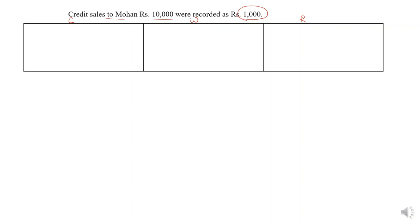First let us write the correct entry. We have to give the entry for credit sales to Mohan at rupees 10,000. So the entry will be: Mohan's account debit, to sales account, the amount 10,000. Narration: being goods sold on credit to Mohan. What was the wrong entry? It was recorded as 1,000. So instead of 10,000, the amount was written wrongly — Mohan's account to sales account — only the amount has been recorded wrongly as 1,000.